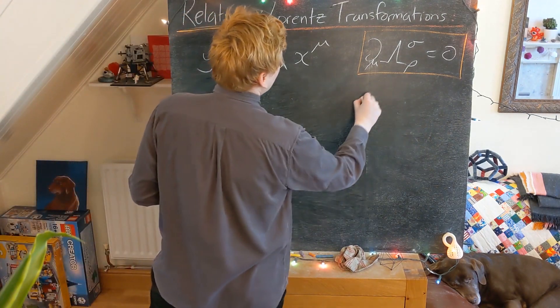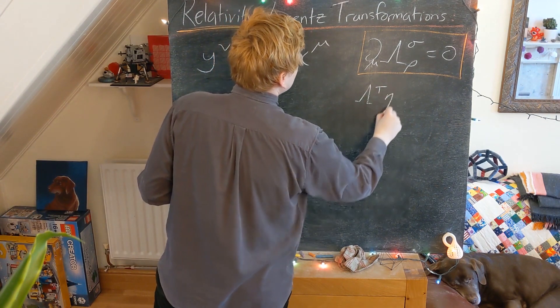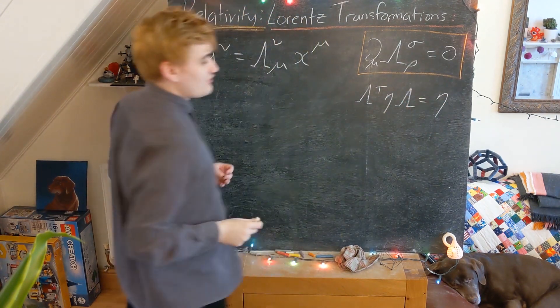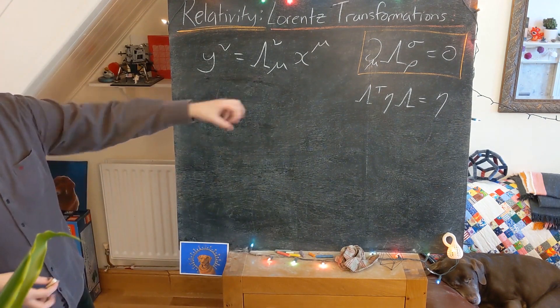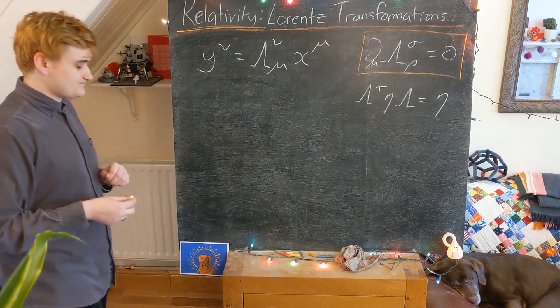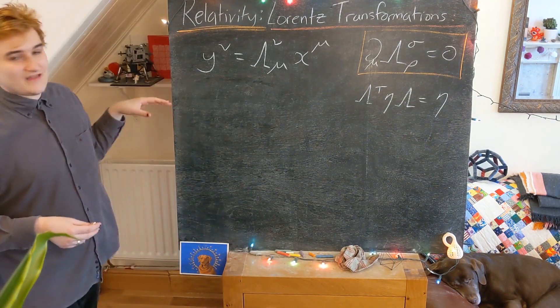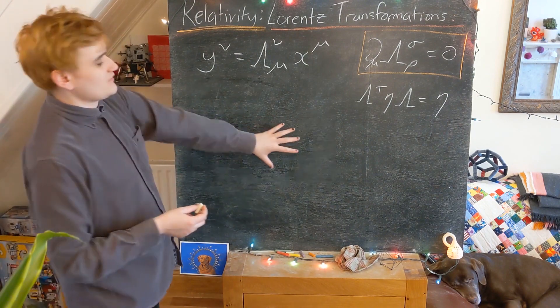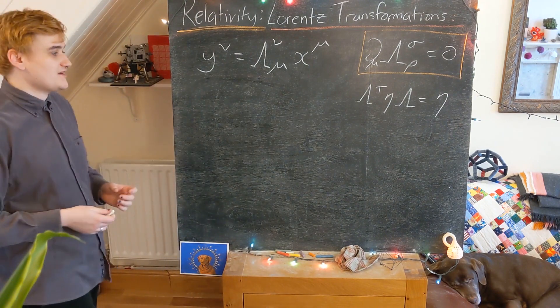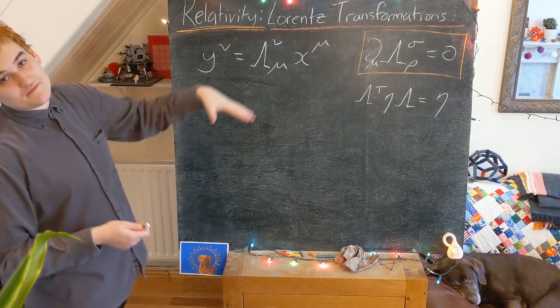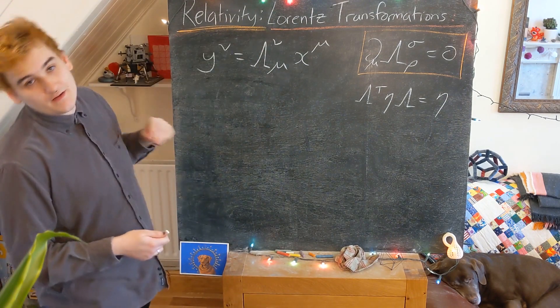Remember we had our other property that the matrix should be left invariant by Lorentz transformation. So by making these postulates, I was able to just give you a matrix, and we were able to show that it satisfies everything and therefore is a Lorentz transformation.